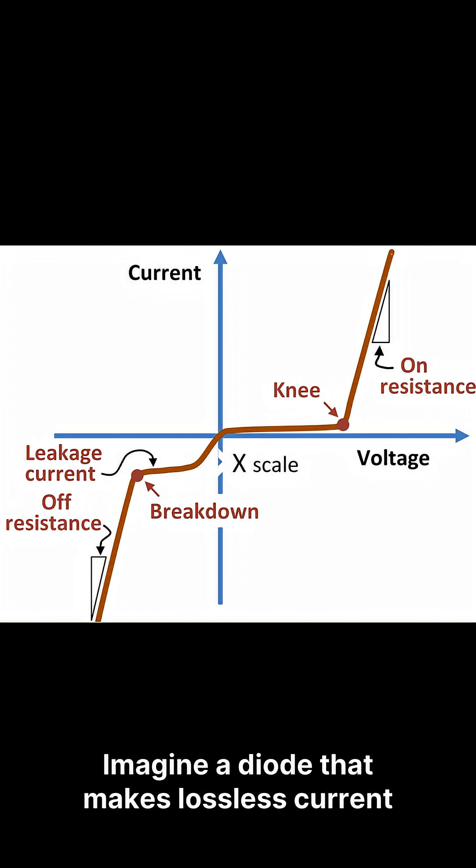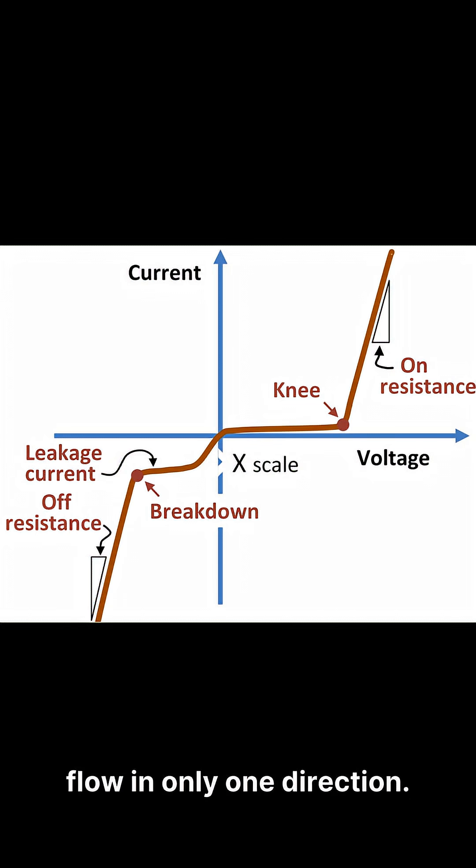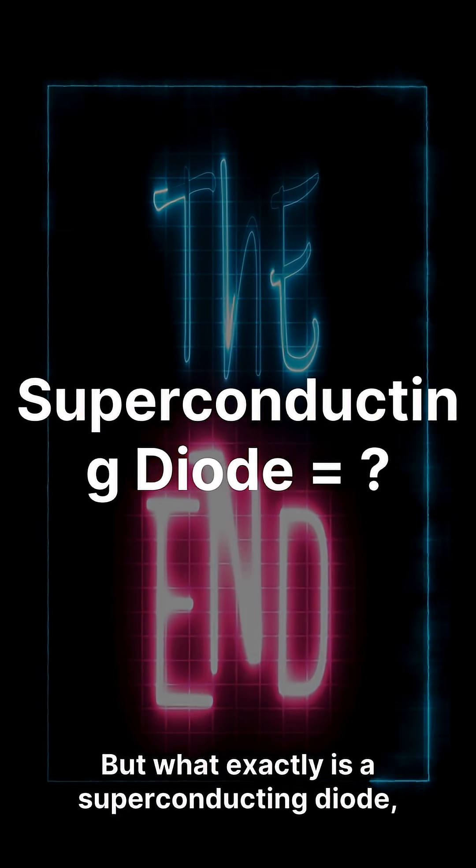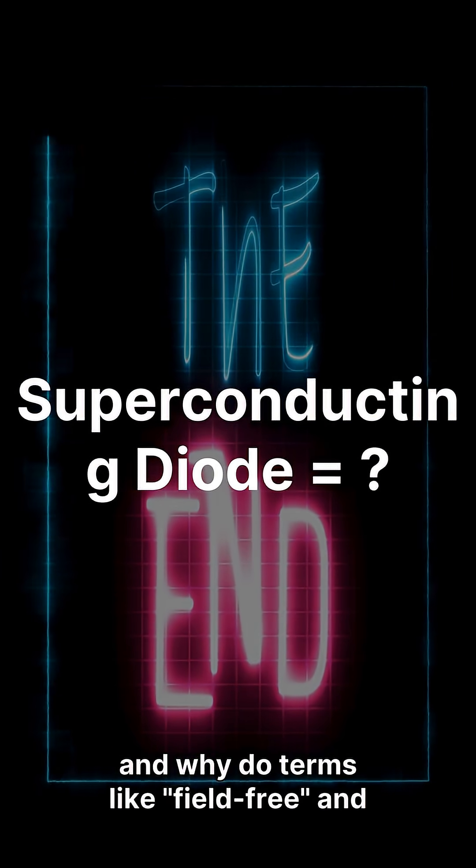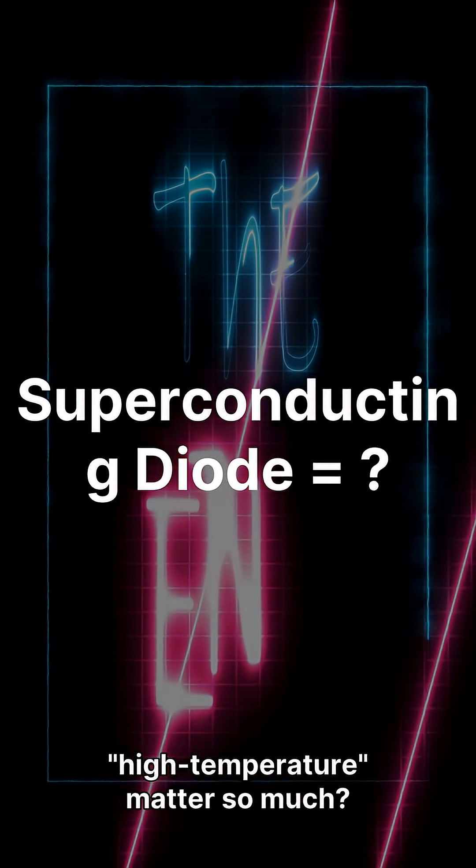Imagine a diode that makes lossless current flow in only one direction. Sounds impossible, right? But what exactly is a superconducting diode, and why do terms like field-free and high-temperature matter so much?